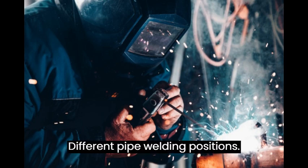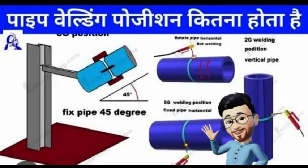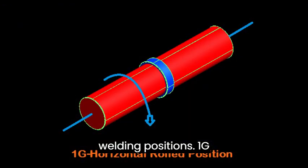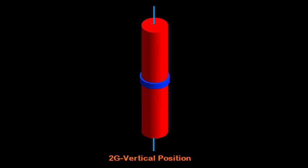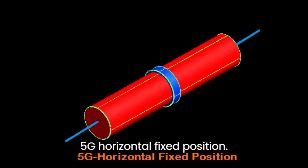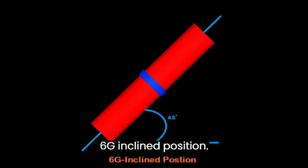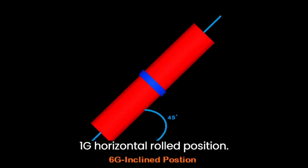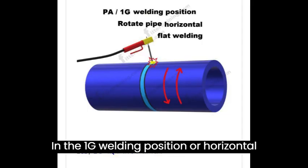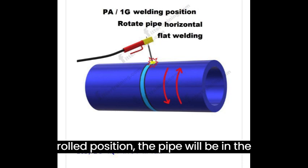There are mainly four types of pipe welding positions: 1G horizontal rolled position, 2G vertical position, 5G horizontal fixed position, and 6G inclined position.